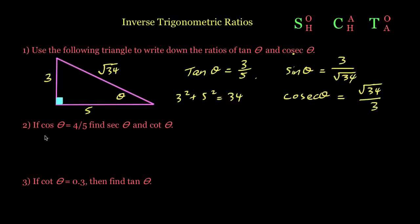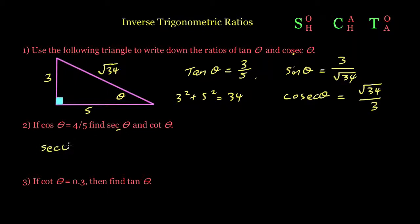For question 2: if cos theta equals 4 over 5, find sec theta and cot theta. Looking at sec theta, the third letter is 'C', so sec is the inverse of cos. Since cos theta equals 4 over 5, sec theta is simply 5 over 4. Now we need to find cot theta.